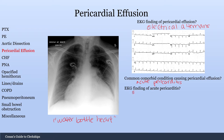What is an EKG finding associated with acute pericarditis? That would be diffuse ST segment elevation. However, more sensitive and more pathognomonic for acute pericarditis is PR segment depression.